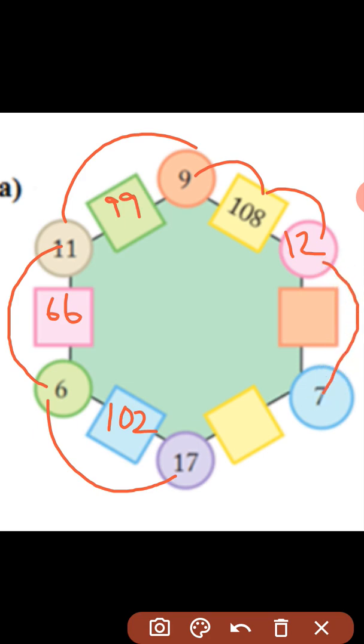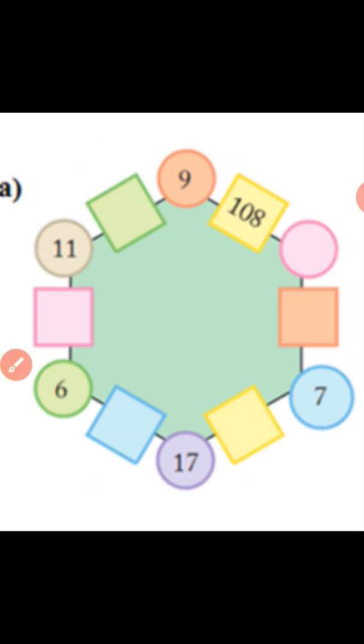Next one is easy 12 into 7 that is 84, 12 and the next product 7 into 17 it is 119. We will see one more example like this.